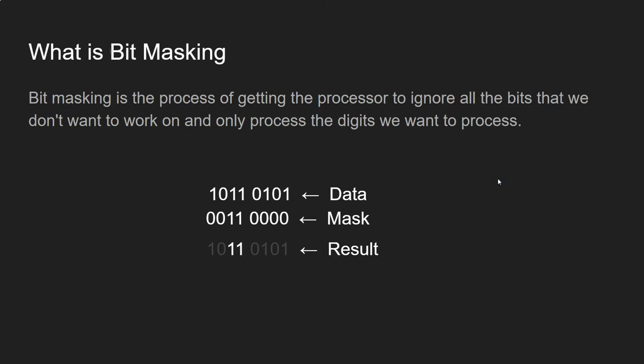Before we get started, let's talk quickly about bit masking. Bit masking is the technique we use so that we only look at, edit, or influence the particular bits that we want to. The way we do that is we use something called a mask, which sounds complicated but it's really, really simple.